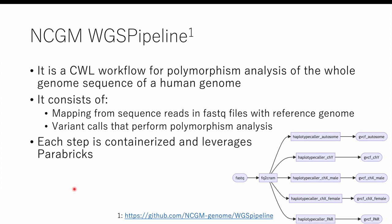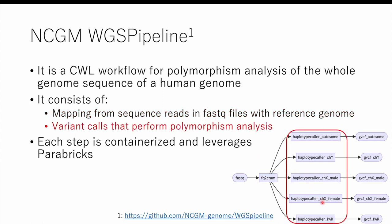Let me explain our workflow named the NCGM WGS pipeline. It is a workflow for polymorphism analysis of the whole genome sequence of a human genome. It consists of FQ2CRAM, which maps the input sequence reads to a reference genome, and several variant callers that perform polymorphism analysis for different regions. Each step is containerized and leverages Parabricks.